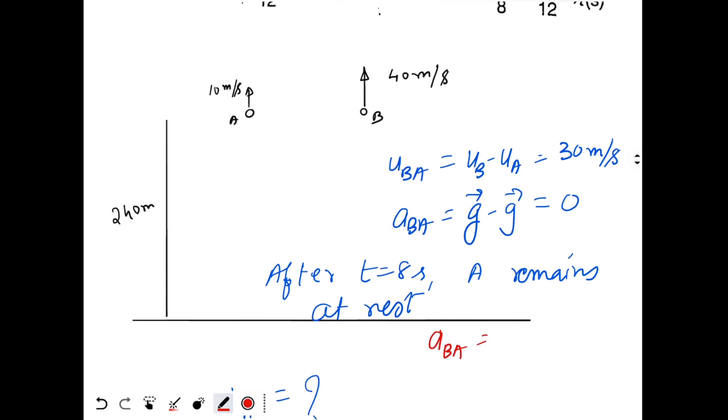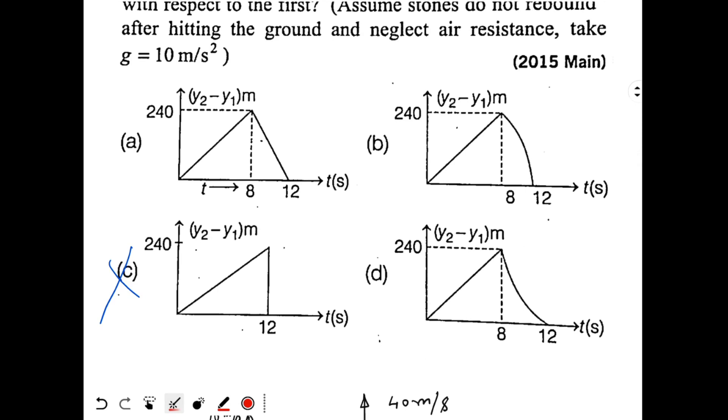After 8 seconds, acceleration of B with respect to A will be g downwards, because A is not accelerating anymore. A is at rest on the ground. Only particle B is accelerating. So particle B has acceleration g downwards. And since it has negative acceleration, the graph should be in the shape of a U downwards. The slope of the graph should increase in negative direction. Velocity is increasing in negative direction. This is straight line, this is wrong. This is a curve with decreasing negative slope, so this is also wrong. We have to mark this option B. For negative acceleration, this is the shape of graph of position with respect to time.